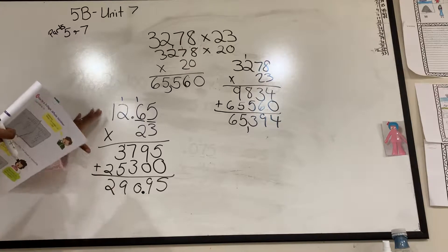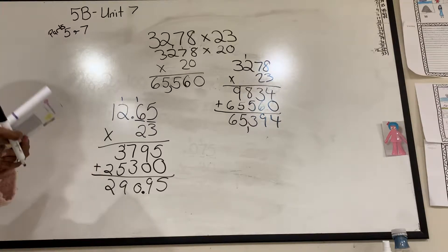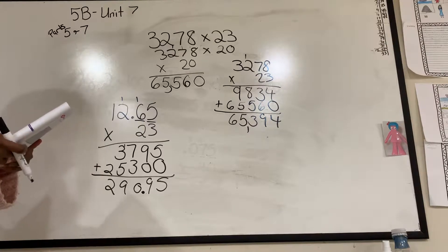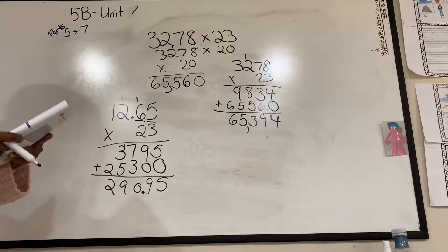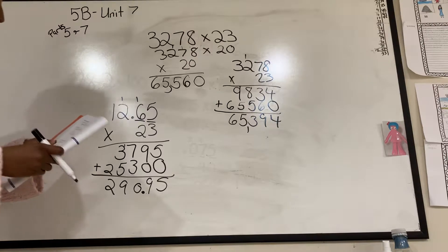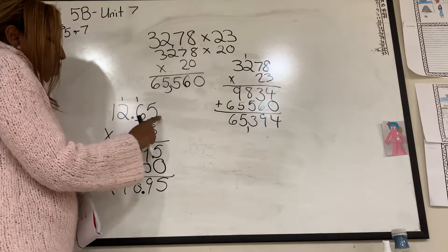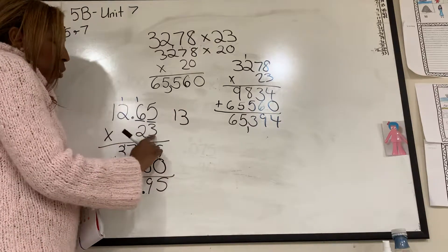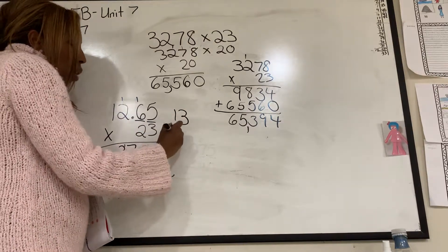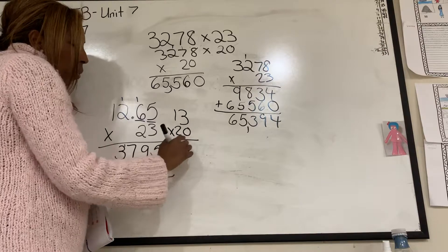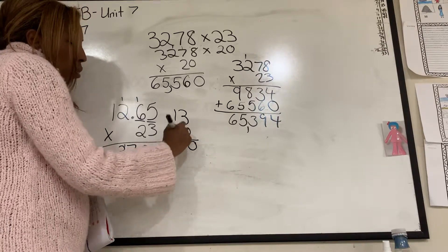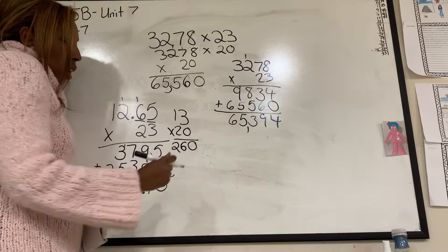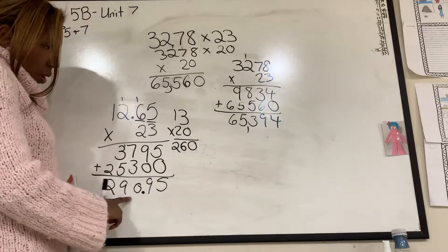I'm just going to show you one more thing using this one. If it says estimate the value of, then they're going to just want you to estimate the whole number. So if I have 12.65, I'm going to say that's about 13. If I have 23, I'm going to say that's about 20. Put the 0 down. 2 times 3 is 6. 2 times 1 is 2. 260.